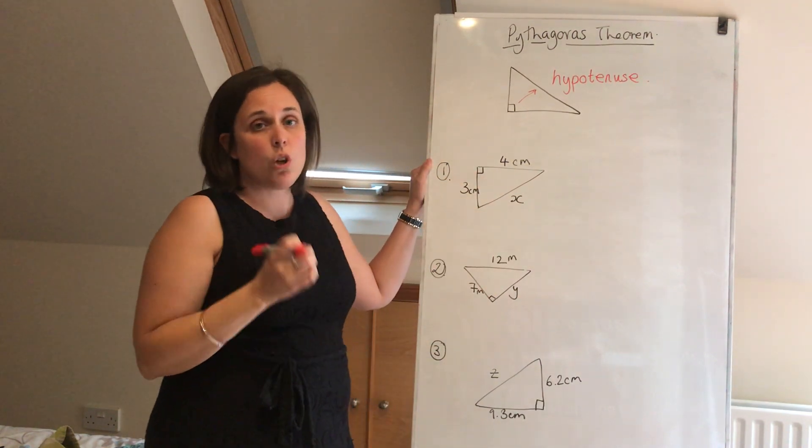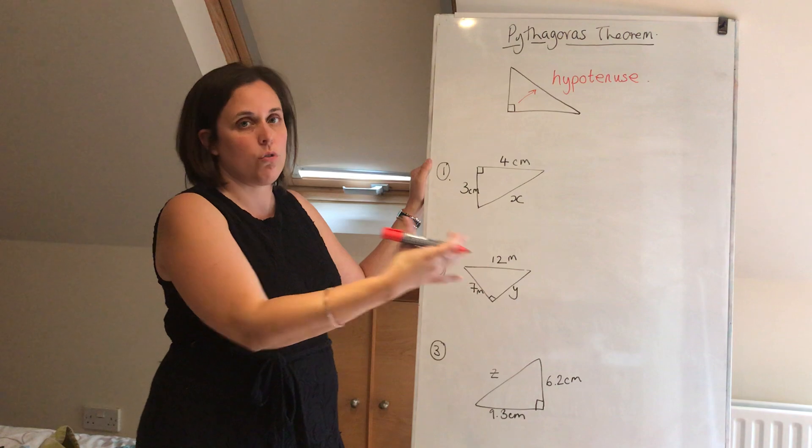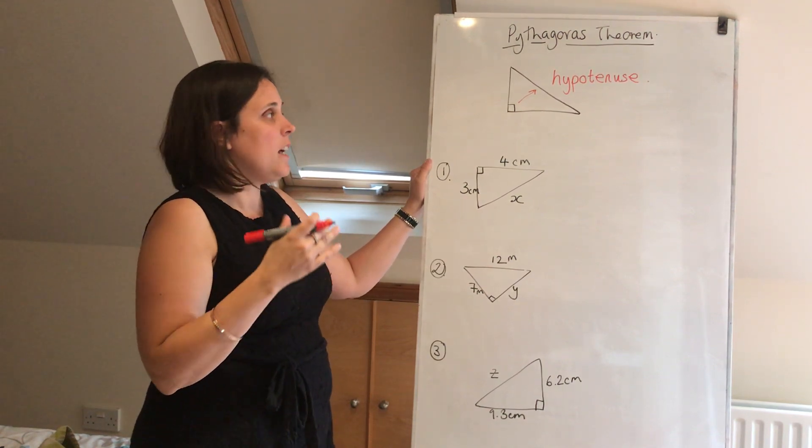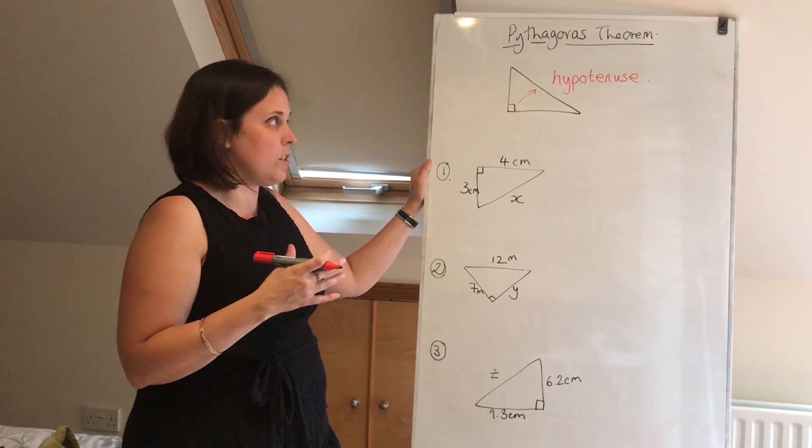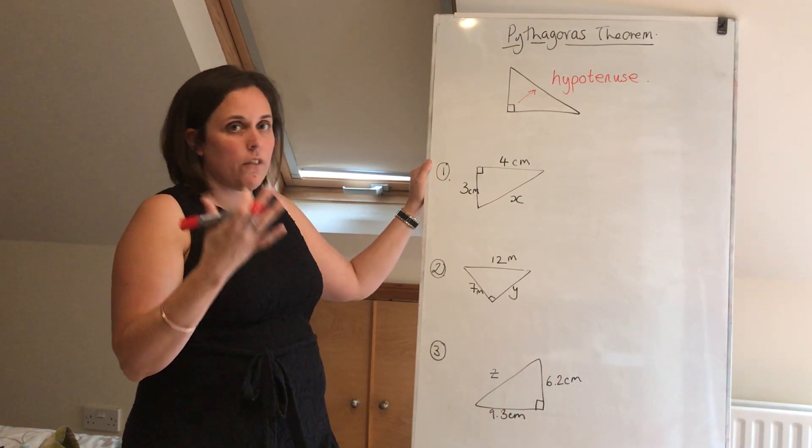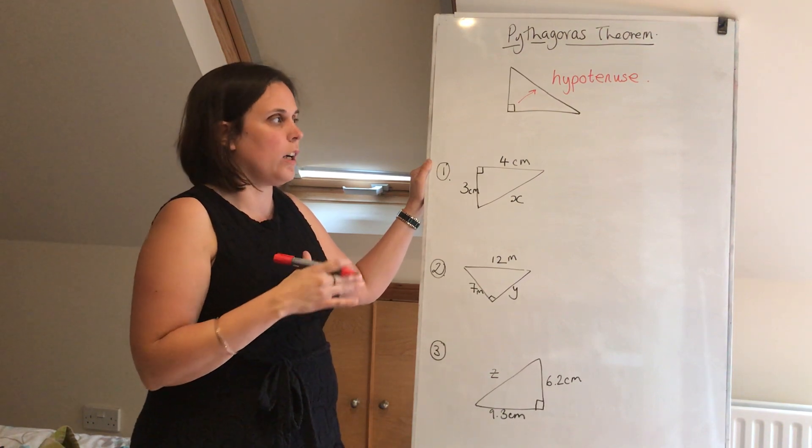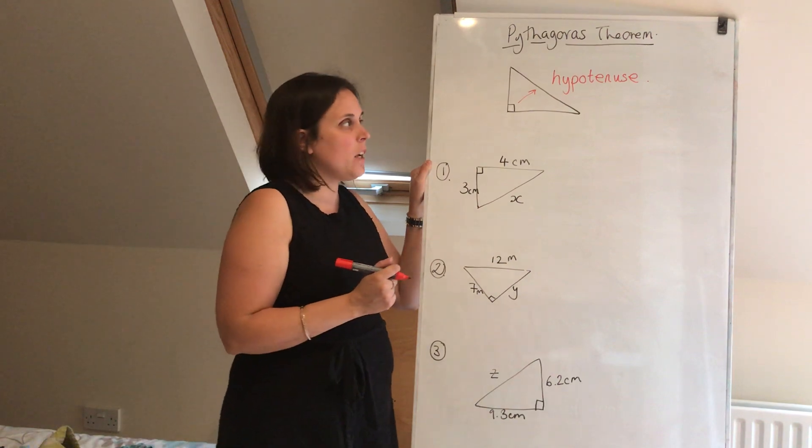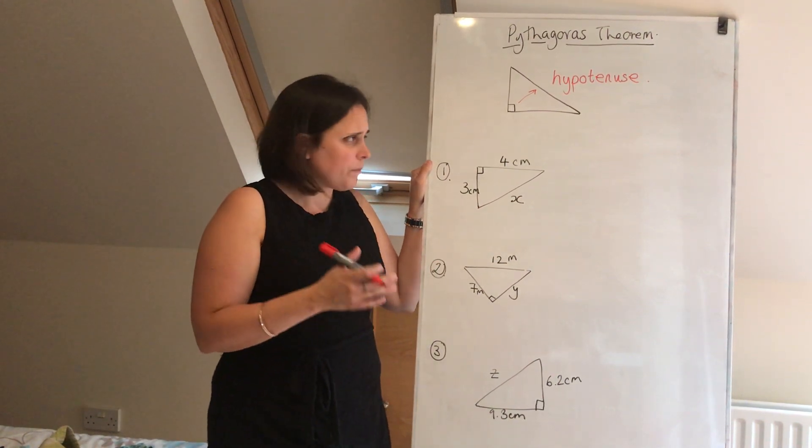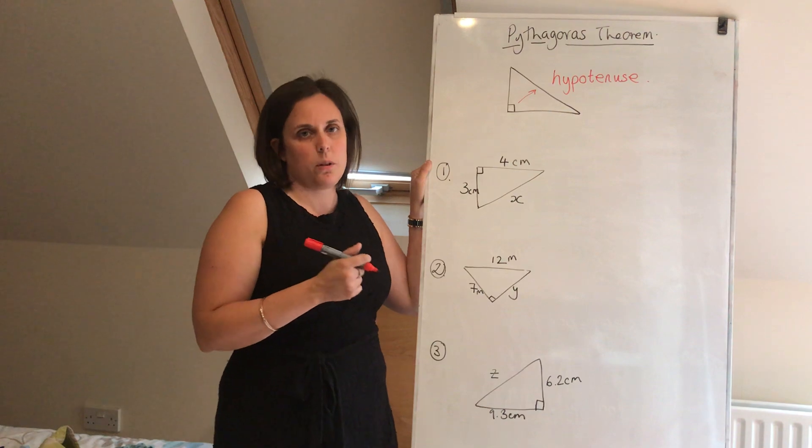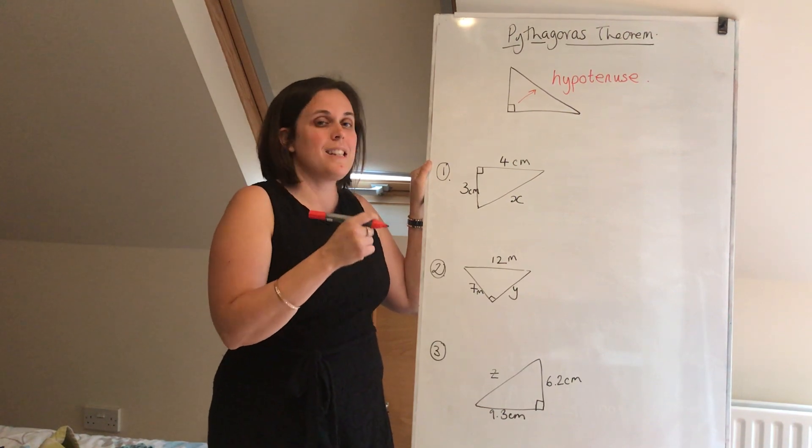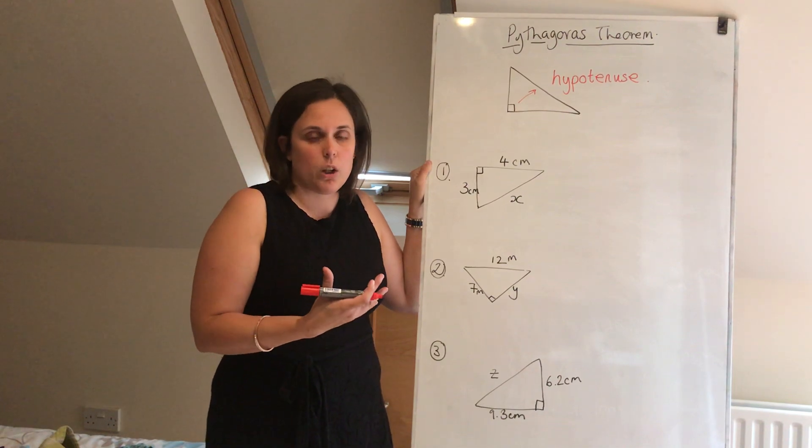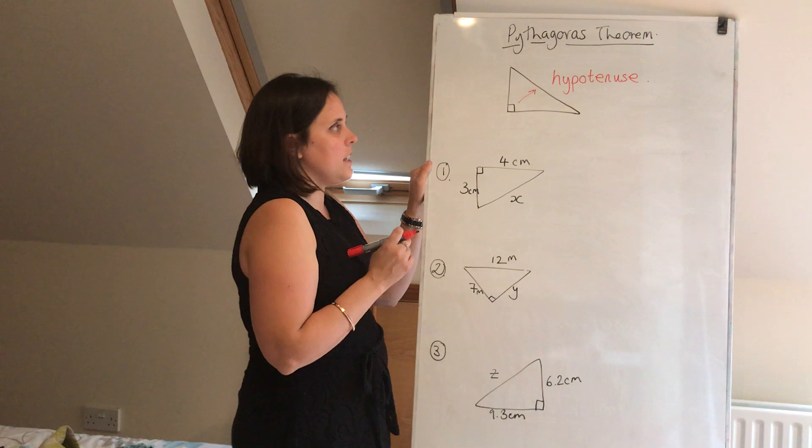Now it's important that you know that word, especially for later on when we do some more things with right angled triangles. You need to know how to spell it and how to identify it. So the first thing you need to know when you're looking at any right angled triangle is, where is my hypotenuse? Now, Pythagoras' theorem states that the square of the hypotenuse of a right angled triangle is equal to the sum of the squares of the other two sides.